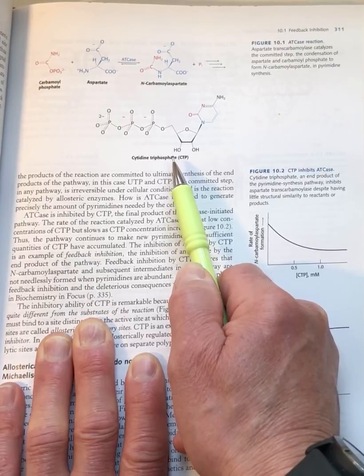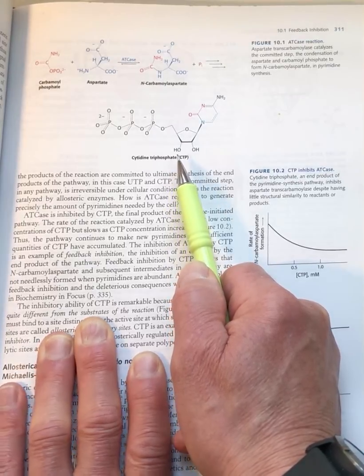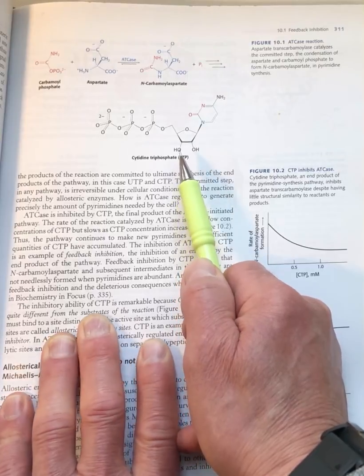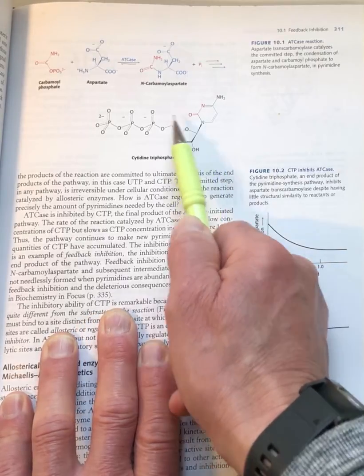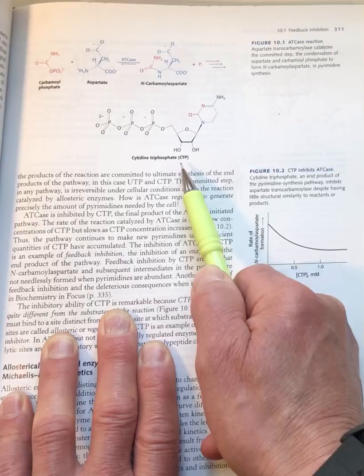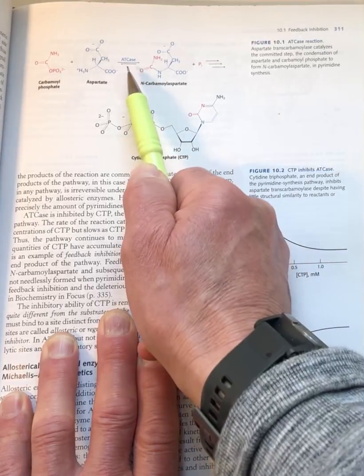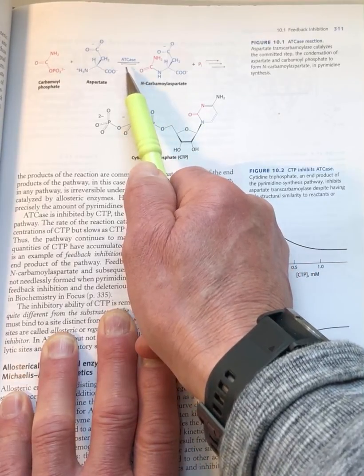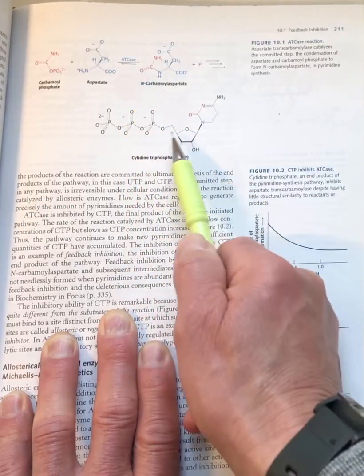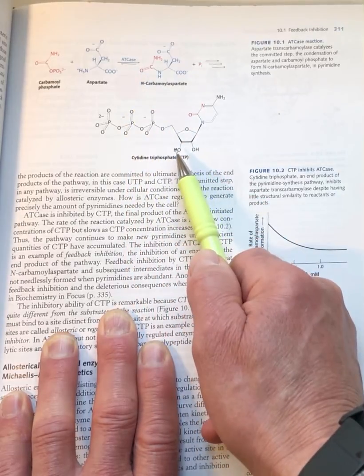What's remarkable about ATCase and why it has biological advantage is that this biosynthetic product can inhibit the enzyme. So the enzyme is regulated, sensitive to how much of this product is available in the cell.